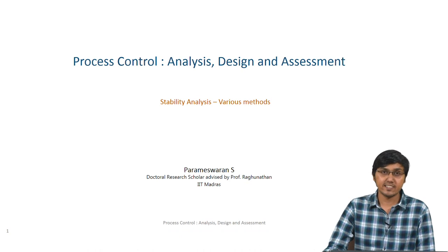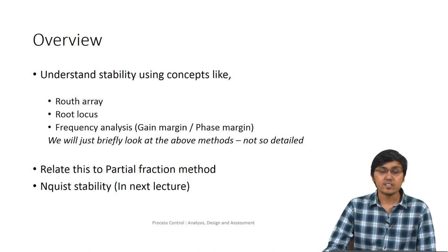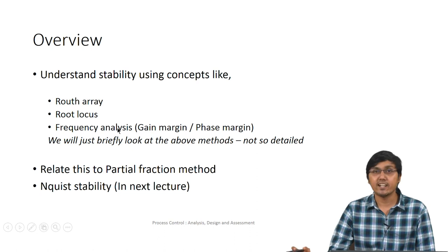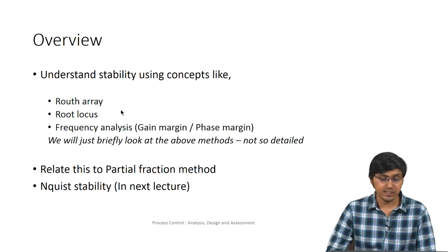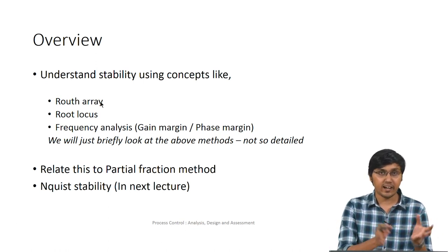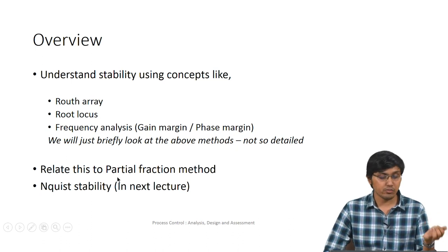Welcome to the next lecture on process control analysis, decision and assessment. Today we are going to look at various methods used for stability analysis: Routh array, root locus, and frequency analysis-based stability analysis. We will briefly look at these methods without going into much detail, and see how they are all connected to each other. In the next lecture we will also see some examples of Nyquist stability.